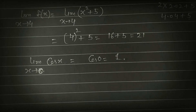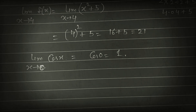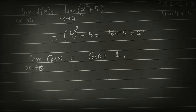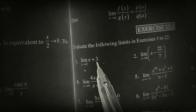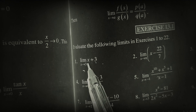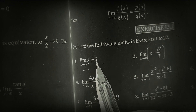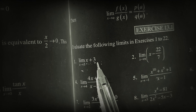Now we will take some examples from exercise 13.1. Look at the first question: limit x tends to 3 of (x + 3). We can put x = 3, so it will be 3 + 3 = 6.